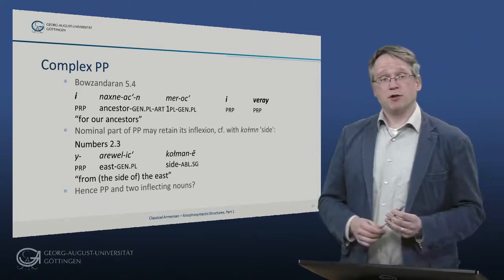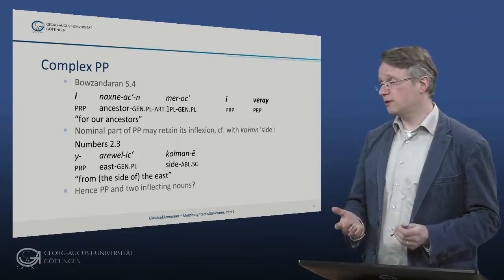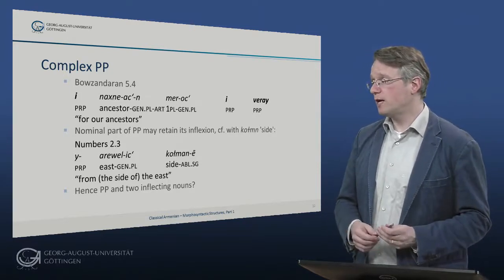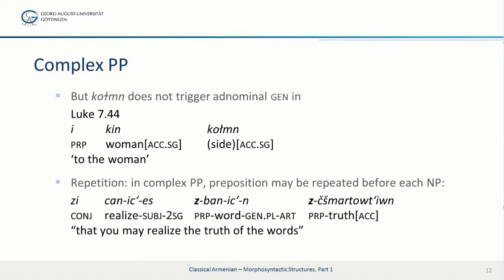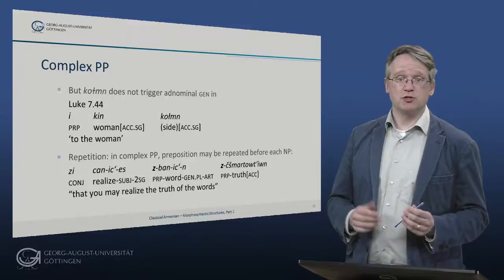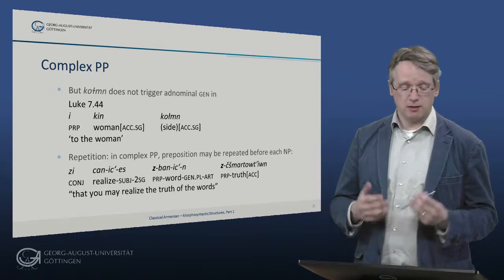The nominal part of such complex adpositions sometimes retains its inflection. That is an interesting feature, for example, with korm, meaning 'side'. Here is an example from Numbers 2:3 — ja revelits kormane — so here we have yod, the preposition, preceding a genitive plural, and here is the appellative that it actually modifies: 'from the side of the east'. That looks like a simple prepositional phrase with two inflecting nouns. But korm doesn't always trigger an adnominal genitive, which seems to show that korm is developing in classical Armenian into a complex circumfix — it no longer triggers the adnominal case one might expect.